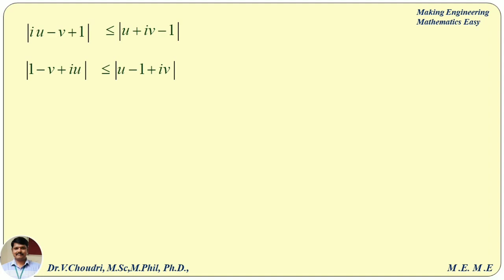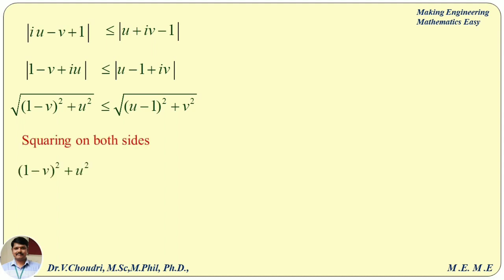By the formula, the modulus of a complex number is the square root of real part squared plus imaginary part squared. Left-hand side: real part is 1 minus v and imaginary part is u, giving square root of (1 minus v) squared plus u squared. Right-hand side: real part is u minus 1 and imaginary part is v, giving square root of (u minus 1) squared plus v squared. Squaring both sides: (1 minus v) squared plus u squared less than or equal to (u minus 1) squared plus v squared. Expanding: 1 plus v squared minus 2v plus u squared less than or equal to u squared minus 2u plus 1 plus v squared. The common terms 1, v squared, and u squared cancel.